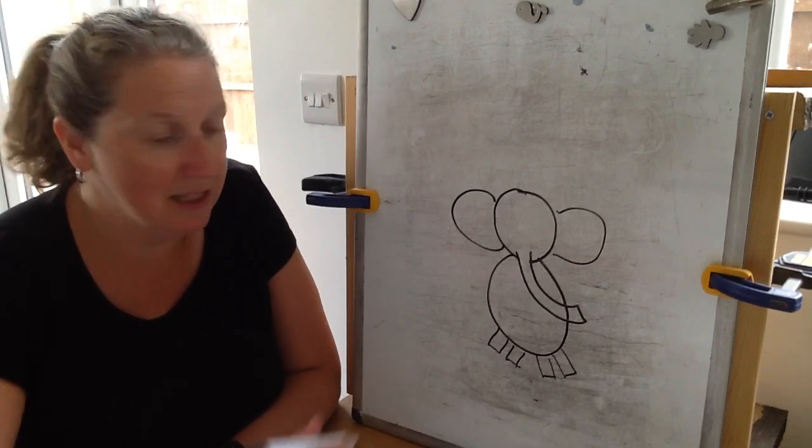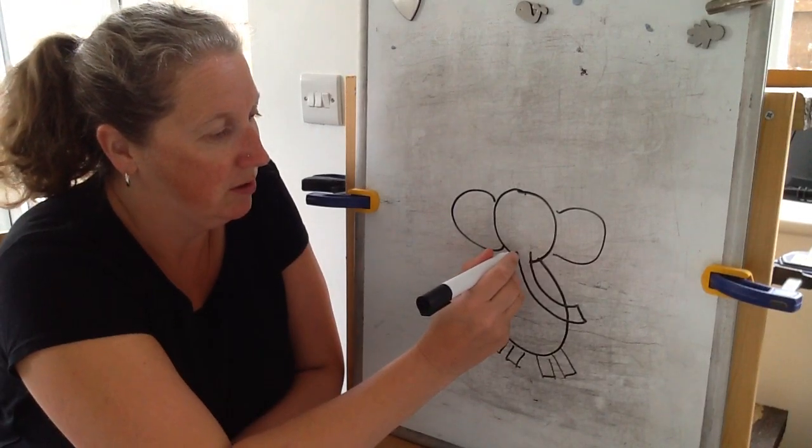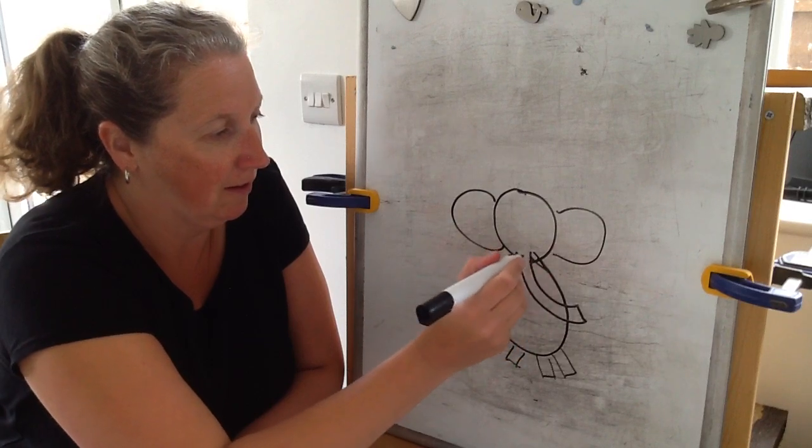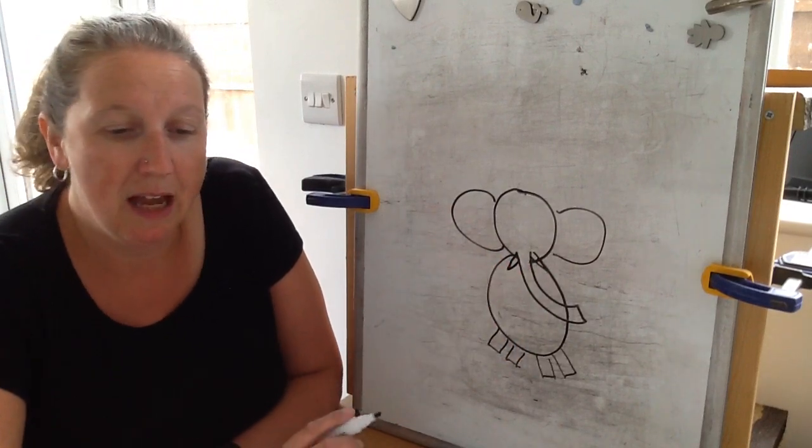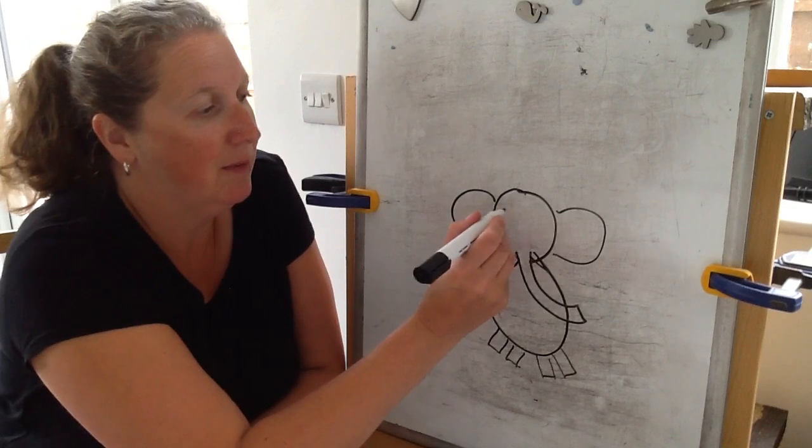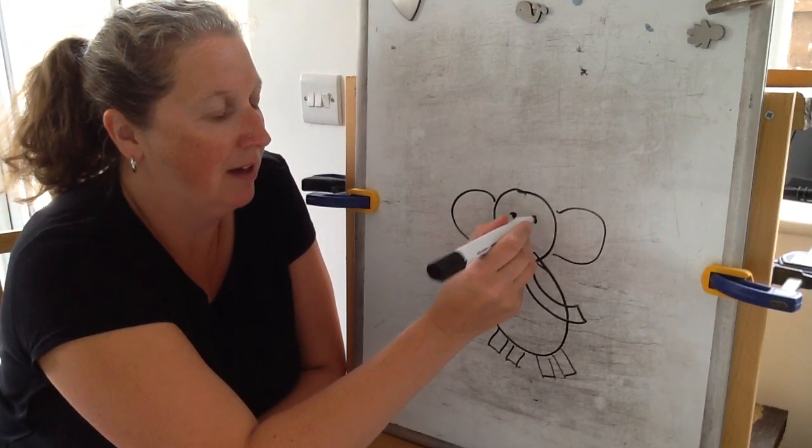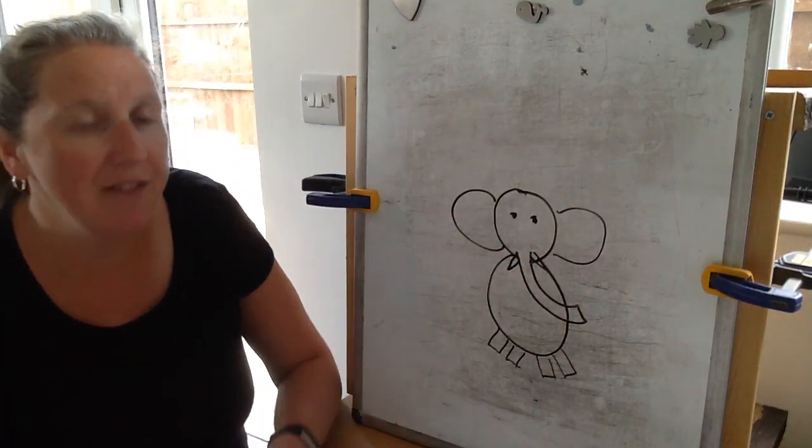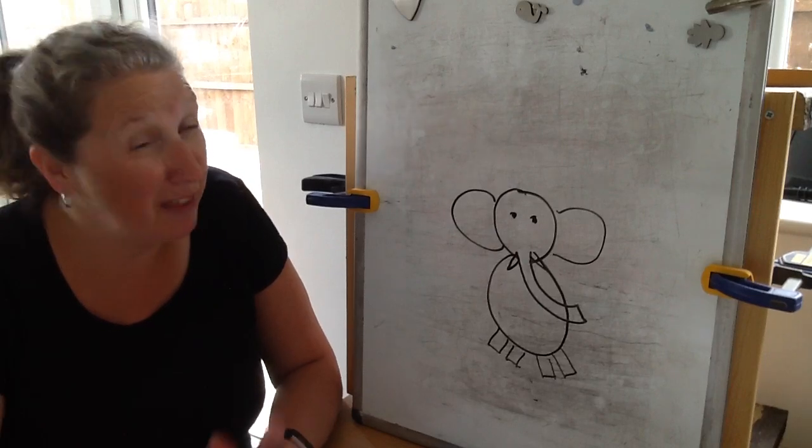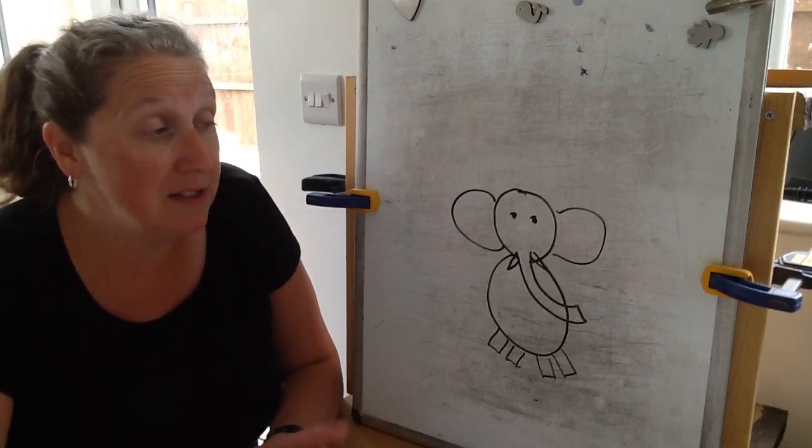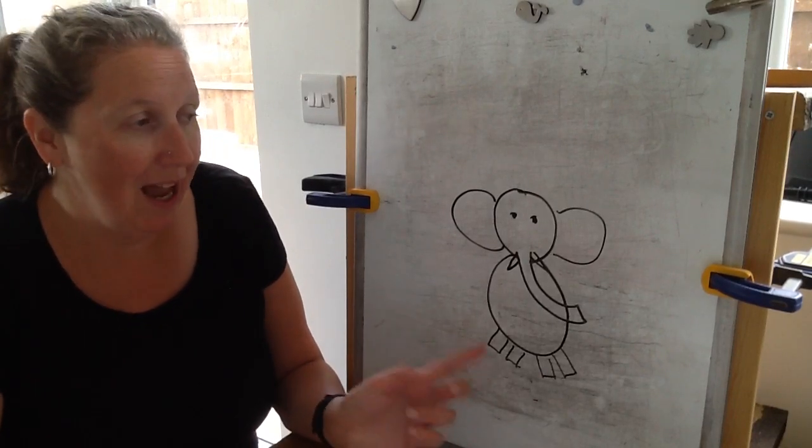Okay, step six, my elephant needs some tusks. Okay, and step seven is that my elephant needs some eyes. So in seven steps I have, and they were quite simple steps, but in seven steps I have managed to draw an elephant.